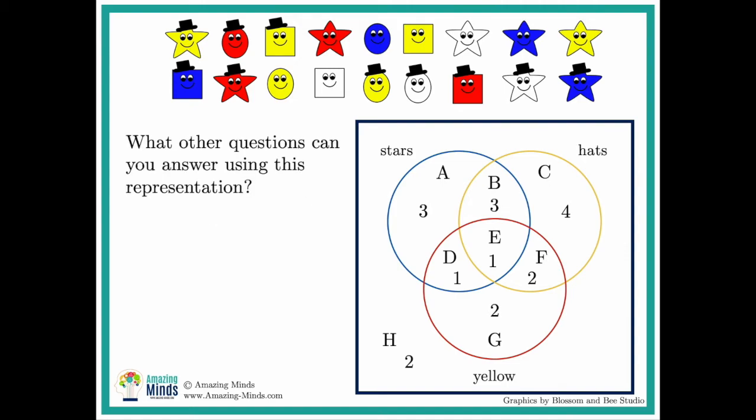What other questions can you ask? This is where it gets really interesting and it's a great chance for you to really see if they understand how to interpret the Venn diagram. You could ask questions such as how many shapes are not yellow? How many shapes are stars that are wearing hats? Notice that second question didn't mention yellow. So it would just have to include both B and E because if it doesn't mention yellow then the yellow circle is not really important in the answer. So you can come up with a lot of great questions to ask your students.